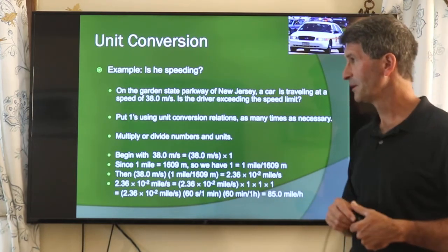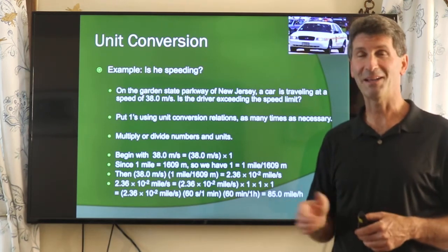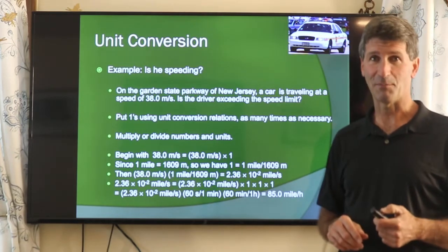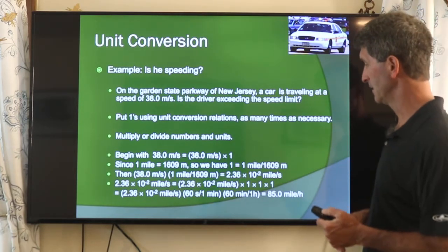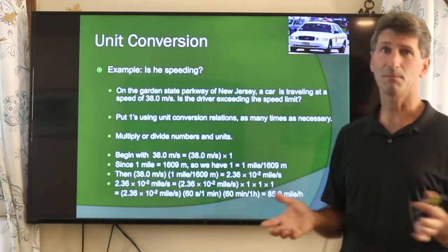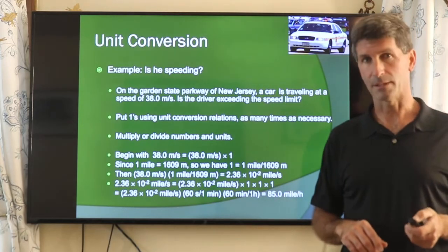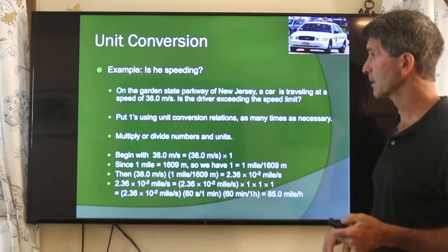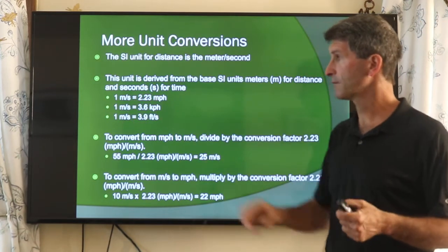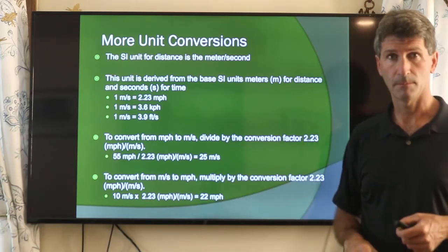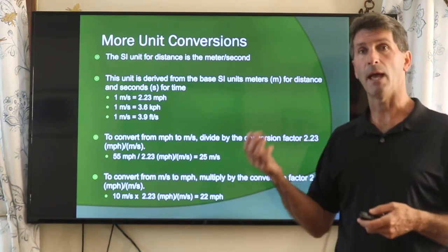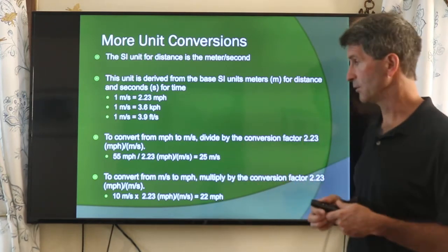If you know the Garden State Parkway, there's no place on the Parkway with a speed limit anywhere close to 85 miles per hour, so obviously they are speeding — at least 20 miles per hour over the limit if it's 65. In conversions, you always want to know: what am I converting from? What am I converting into? Be able to eliminate those quantities you want to get rid of and introduce those quantities you want to convert to.